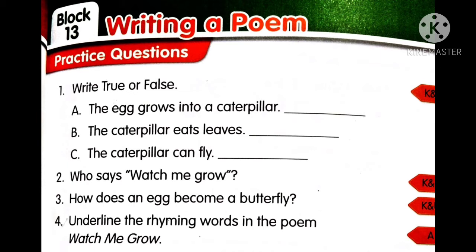Now coming to the fourth one: underline the rhyming words in the poem 'Watch Me Grow.' Underline them in the textbook and also write them in your classwork.